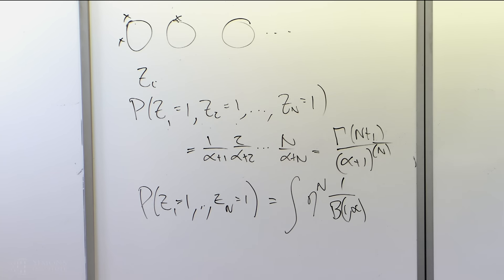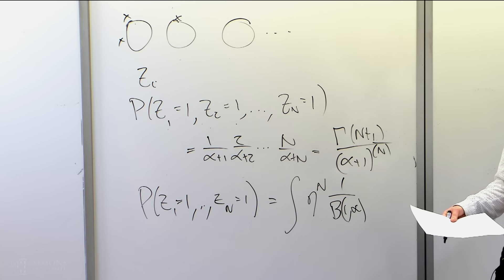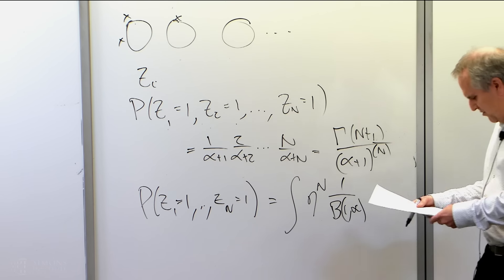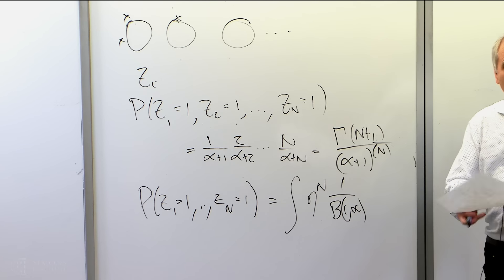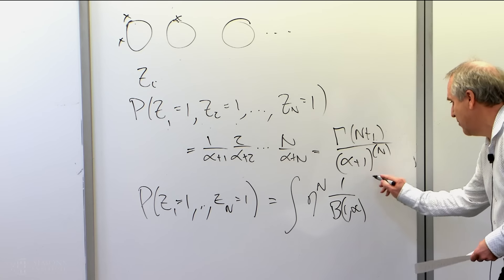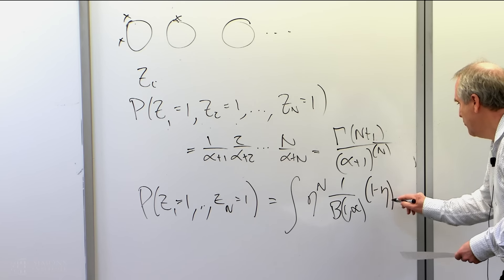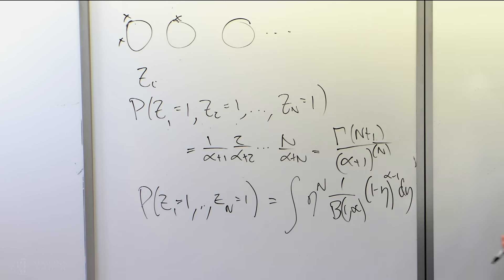That's suggested by de Finetti with a particular guess for what the de Finetti mixing measure might be. You don't have to know a lot of calculus to remember that this is a gamma — it's a ratio of gammas. You plug it in and do this little integral and you get out exactly this expression.